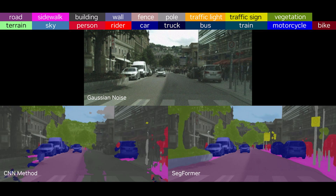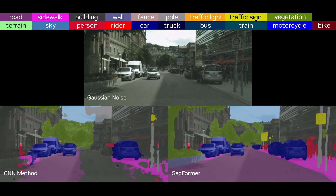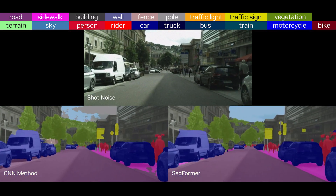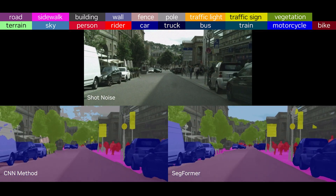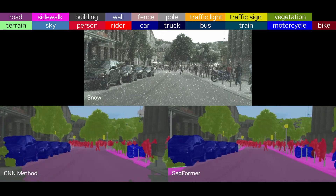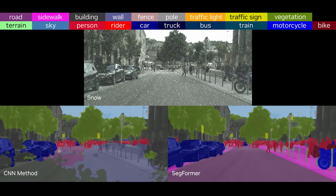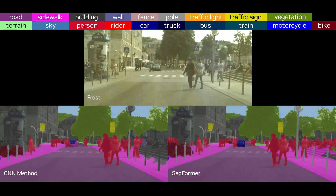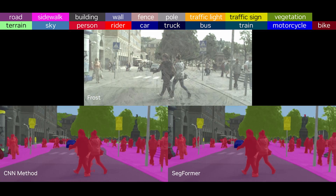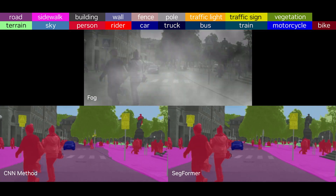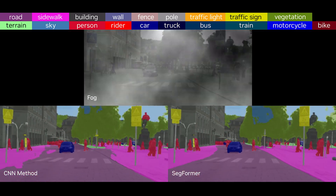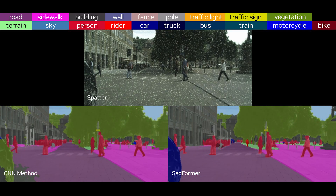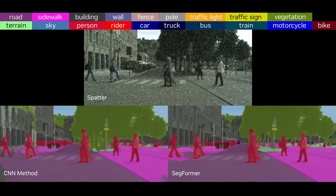When different types of noise are introduced, Secformer significantly outperforms traditional methods. Extreme weather conditions like snow and frost can be challenging for AV perception, but Secformer continues to show strong robustness, even in conditions that were not part of the original training set.